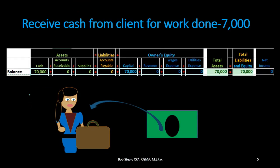For the next transaction we're going to start with the beginning balance, then add the new activity, and then arrive at the new balance. As we record these transactions we always start in balance, record something that will be in balance, and end with something that remains in balance.